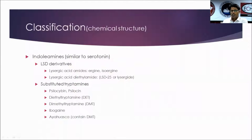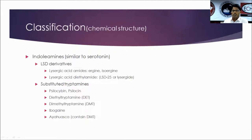They are naturally available and also synthetic. Coming to classification of the psychedelics, they are classified according to their chemical structure. First, there are indolamines, which are similar to serotonin. These drugs are similar to some of our neurotransmitters — the indolamines are similar to serotonin.